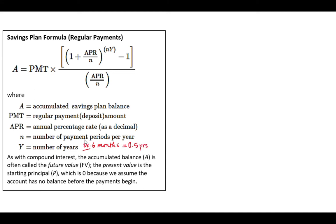A is called the accumulated balance or the future value, and the present value of this account is called the principal. It's kind of like zero at the beginning, but we don't use that in this formula. We're simply using the actual monthly payments.